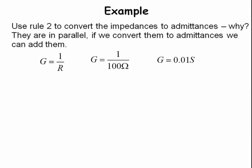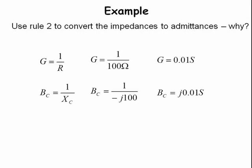First, we convert resistance to admittance. Admittance equals 1 over resistance, which is 1 over 100, which gives us .01 S. Next, we convert capacitive reactants to admittance. That gives us 1 over a minus J100, which gives us J times .01 S. Now, we can add the admittances together.